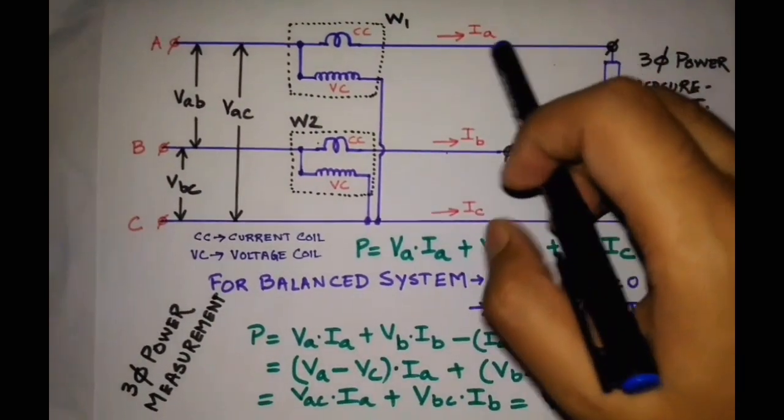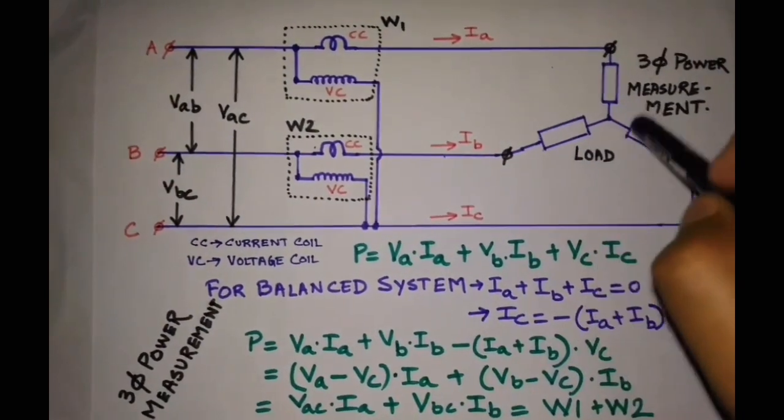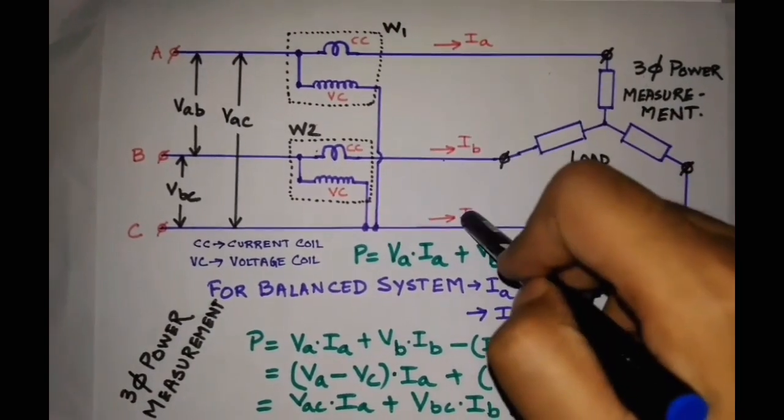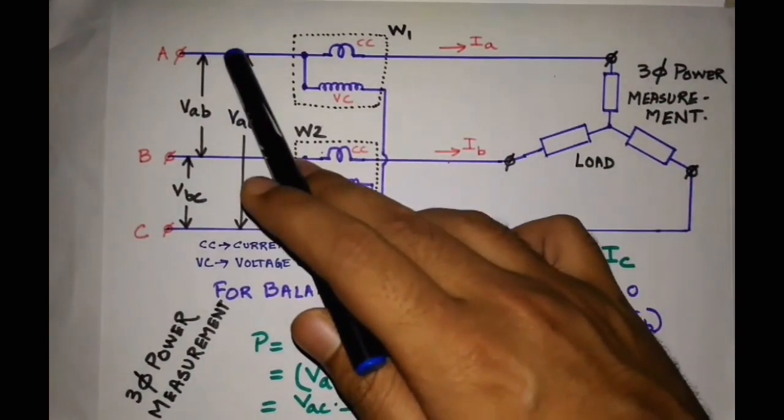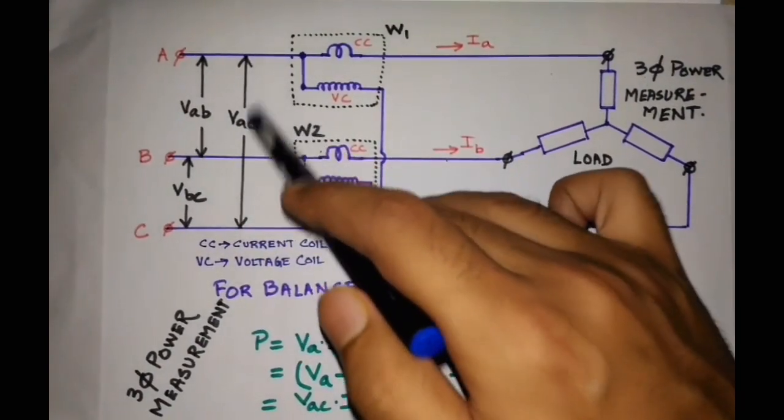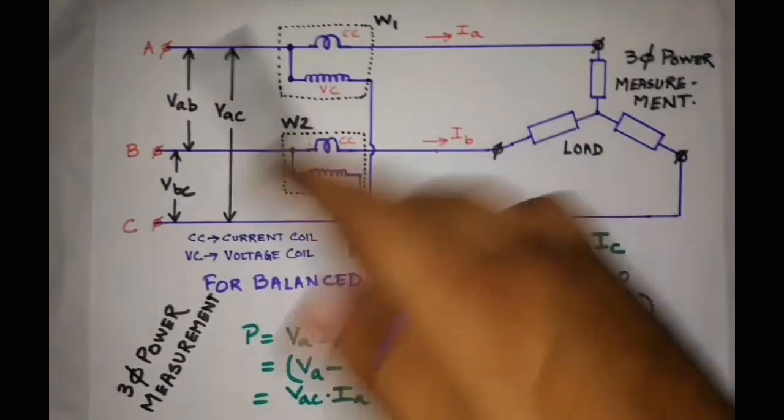Our system is receiving three-phase current in terms of Ia, Ib, Ic, and the applied voltages across the two terminals are Vab, Vbc, and Vac. These are line to line voltages.